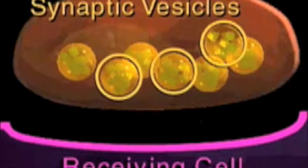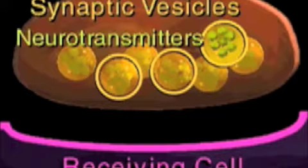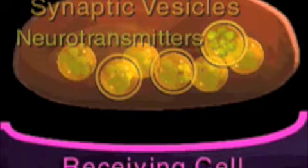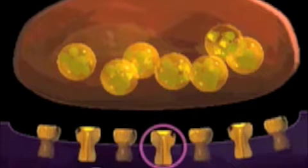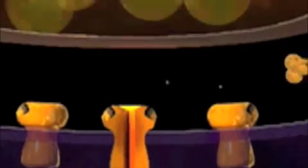Within the axon terminal are many tiny packets, called synaptic vesicles, that store and release the neurotransmitter. On the receiving or post-synaptic cell are receptor molecules. In a cholinergic synapse, an action potential causes the release of ACH, which crosses the cleft and attaches to binding sites on the surface of the receptor molecules.